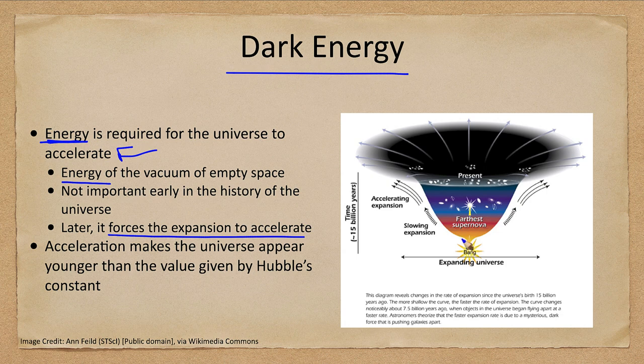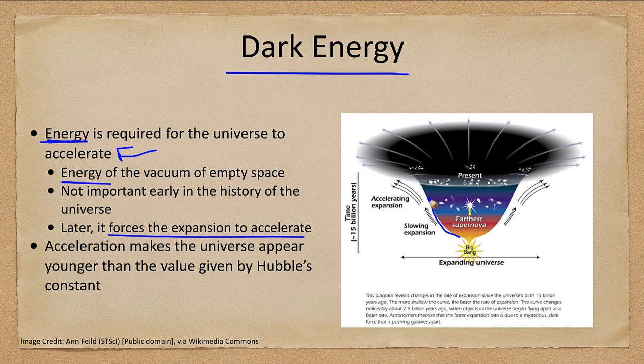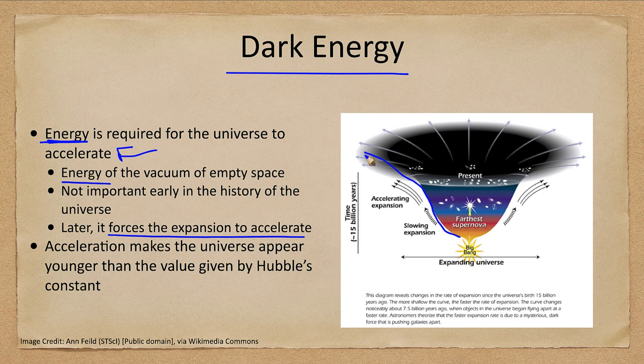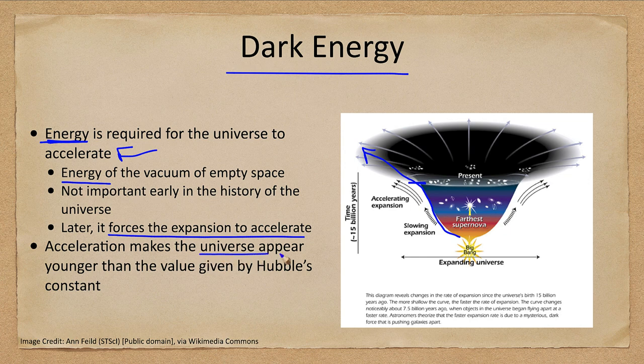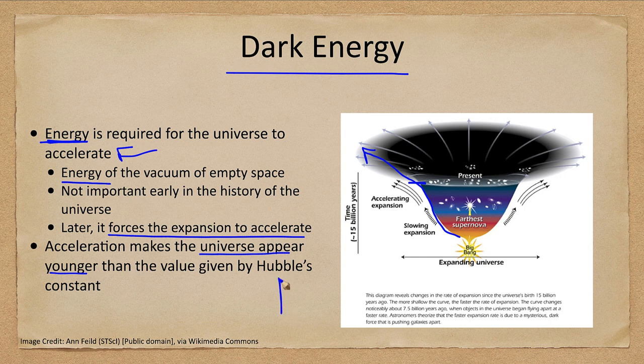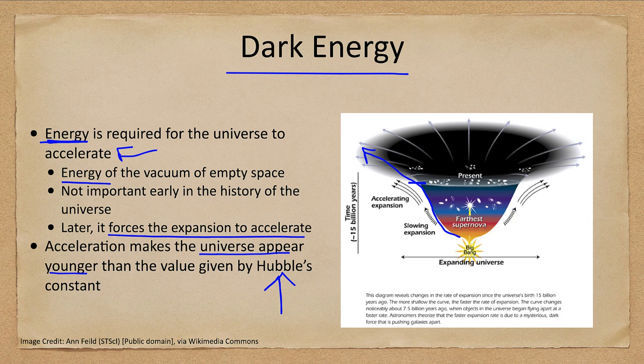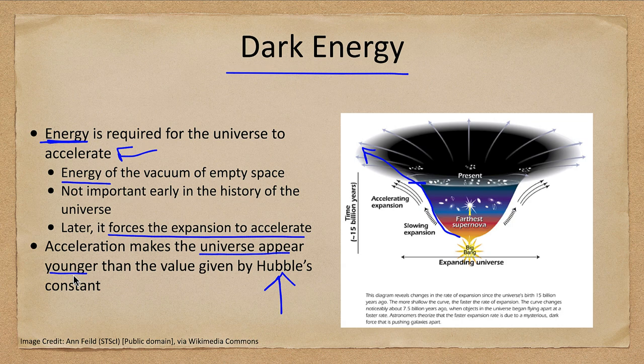So originally, we had the Big Bang, and we had expansion, and it was slowing down. However, once we got to the point where the dark energy dominates, then it began to accelerate. And here we are right now in this section. But in the future, things will accelerate even faster outward. So the acceleration will make the universe appear younger than the value given by Hubble's constant. Remember, Hubble's constant is based on the universe always expanding at the same rate. If it's now expanding faster, we are going to make the universe appear younger than it truly is.